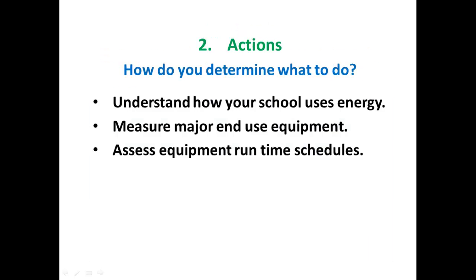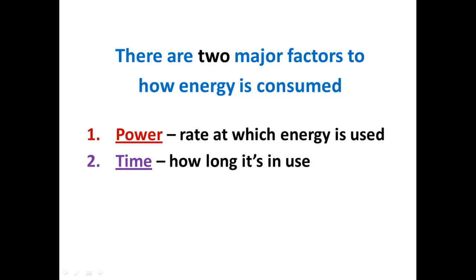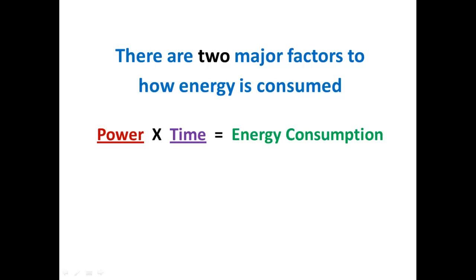When we look at actions, the question is: how do you determine what to do? First we have to understand how the school uses energy. We may measure major end-use equipment to find out how much power it's using, and assess equipment run times. There are two major factors in energy consumption: number one is power — the rate at which energy is used — and number two is time — how long it's in use. Power times time equals energy consumption, so if we can affect either power or time or both, we can reduce energy consumption.